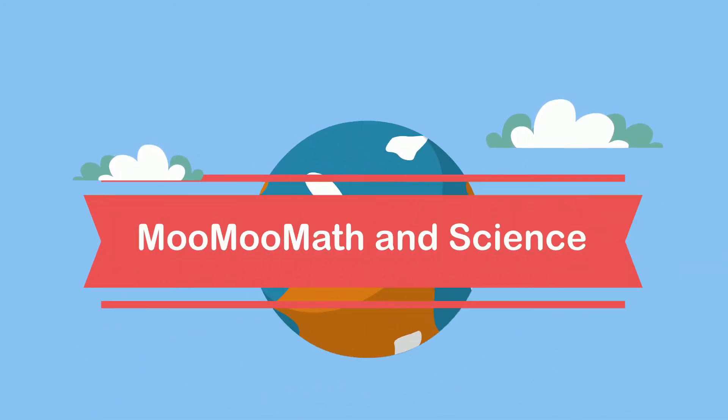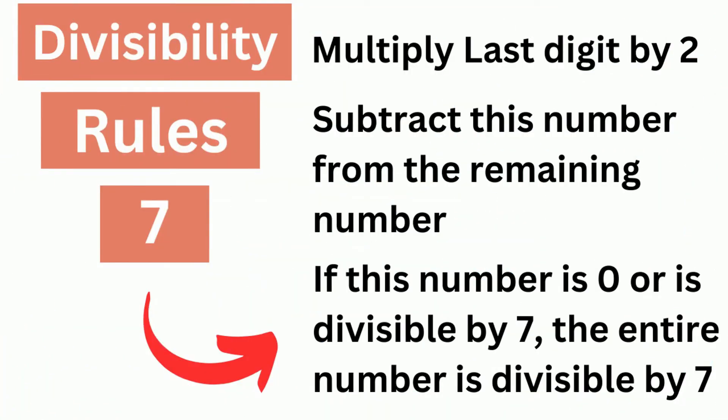Welcome to Moo Moo Math and Science. In this video, let's go over how to figure out if a number is divisible by 7. You can use this technique: take the last digit and multiply it by 2, then subtract this number from the remaining number. If this number is 0 or divisible by 7, the entire number is divisible by 7.